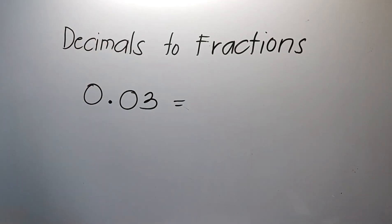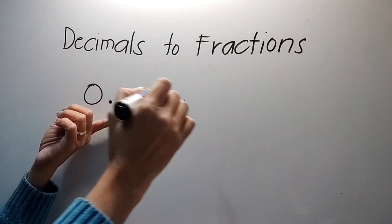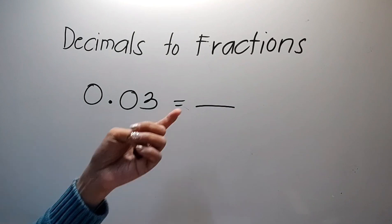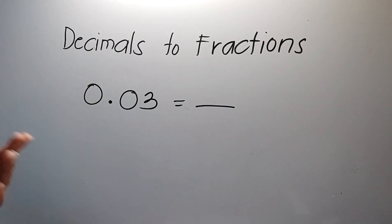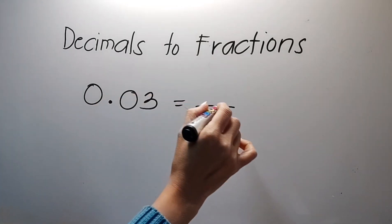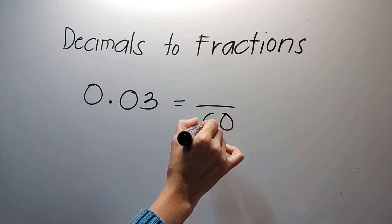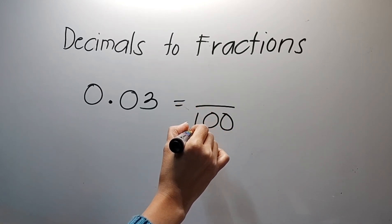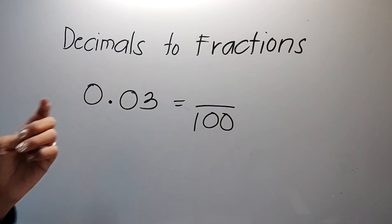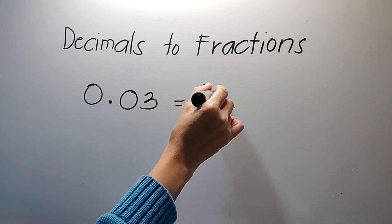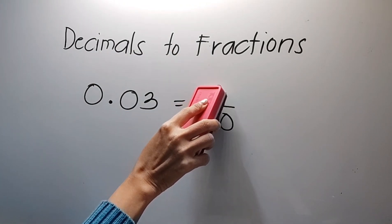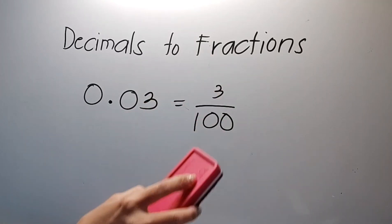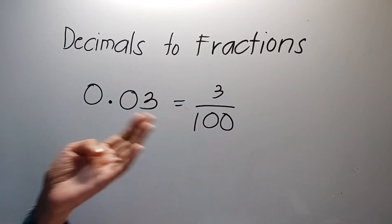Paano naman kapag ganito? Ulitin po — unahin natin ang denominator, yung nasa baba. Bilangin kong ilang place after ng decimal point — one, two. Ibig sabihin, dalawang zero, maglagay ng one, and then write one and copy. Understood na kasi wala namang value yung nandoon, so three hundredths.